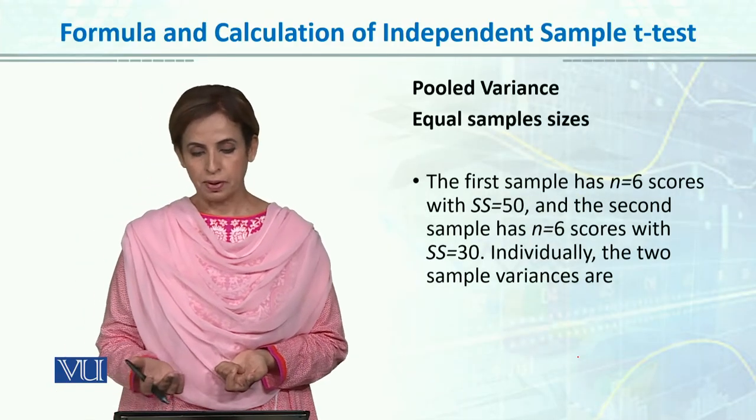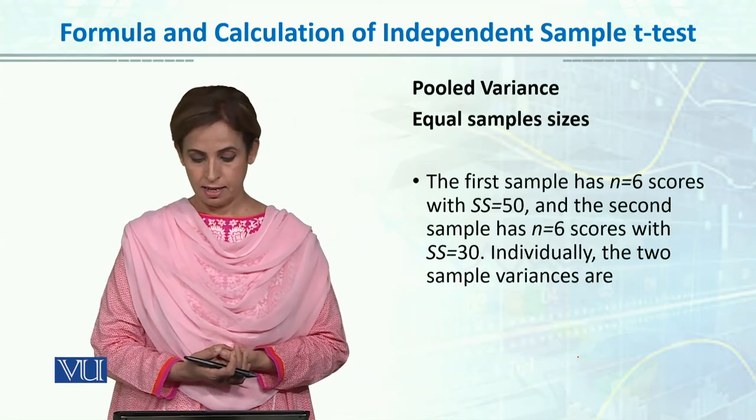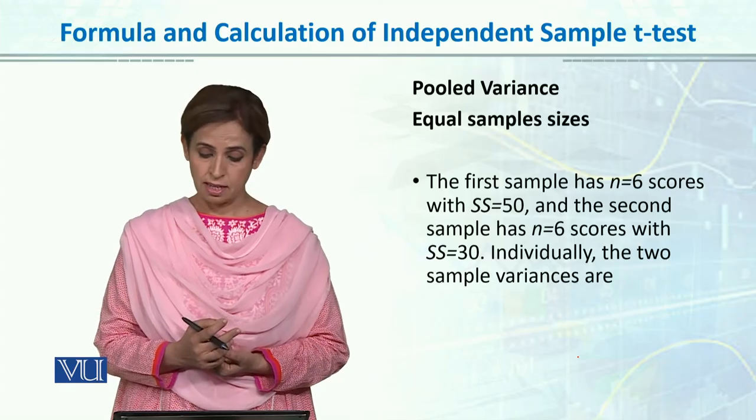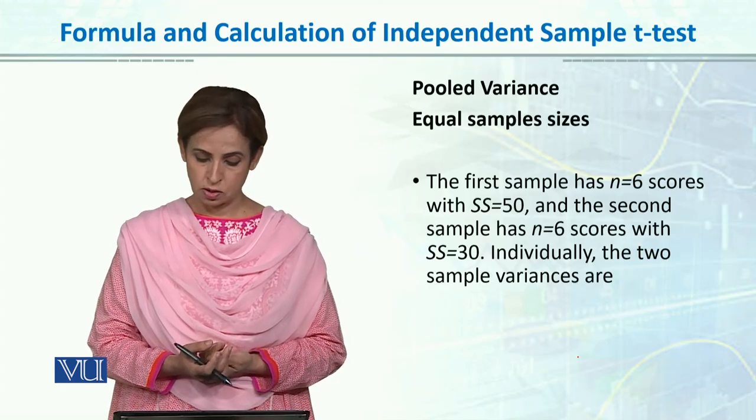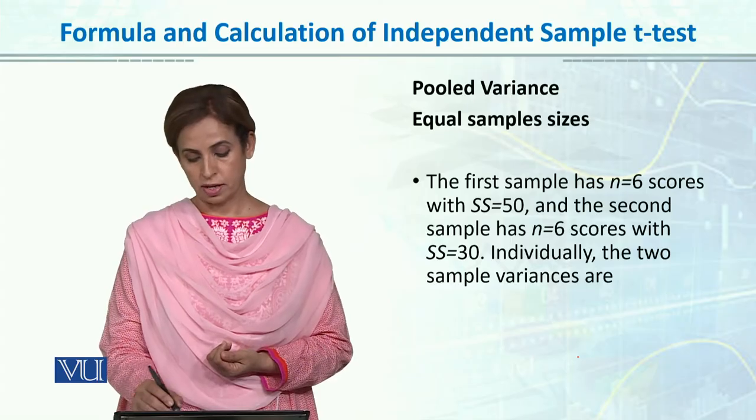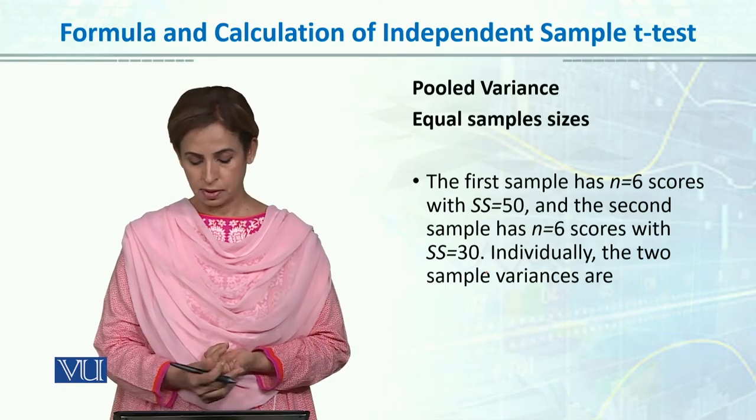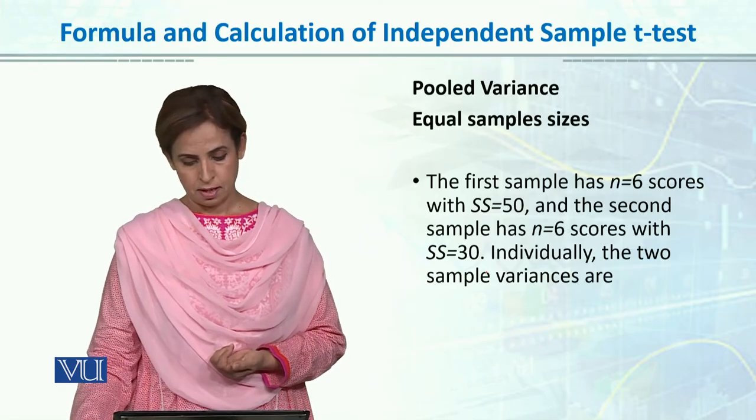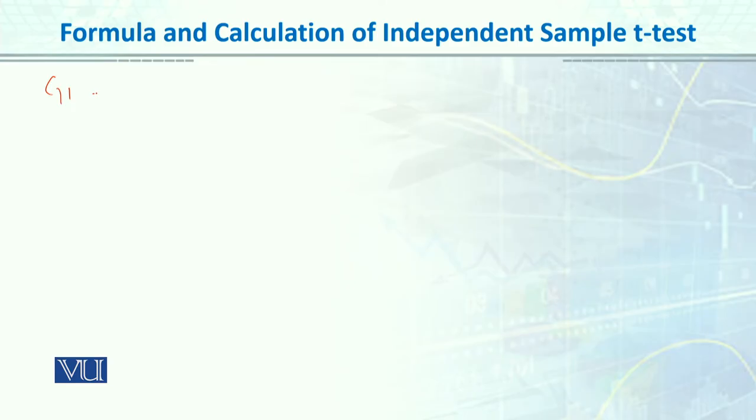This is an example showing how to calculate pooled variance. You have two groups. The first sample has n=6 and SS=50. The second sample has n=6 and SS=30. How do we get the variances individually for the two samples?